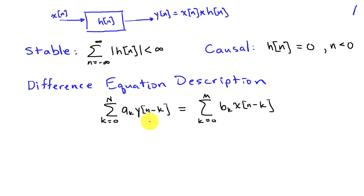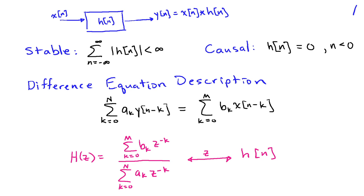We are interested in systems described by difference equations, which we'll write in the standard form: the sum K equals zero to N of A_K times Y of n minus K, equals the sum K equals zero to M of B_K times X of n minus K. These difference equations have system functions H of Z given by a ratio of polynomials in Z inverse, where the numerator polynomial is the sum K equals zero to M of B_K Z to the minus K, and the denominator polynomial is the sum K equals zero to N of A_K Z to the minus K.